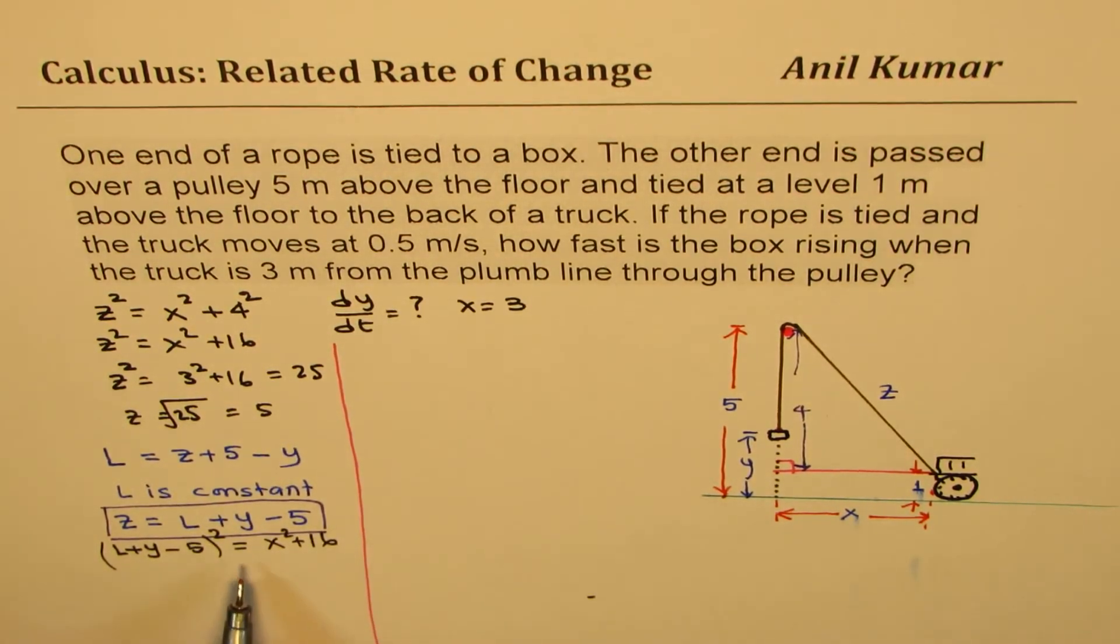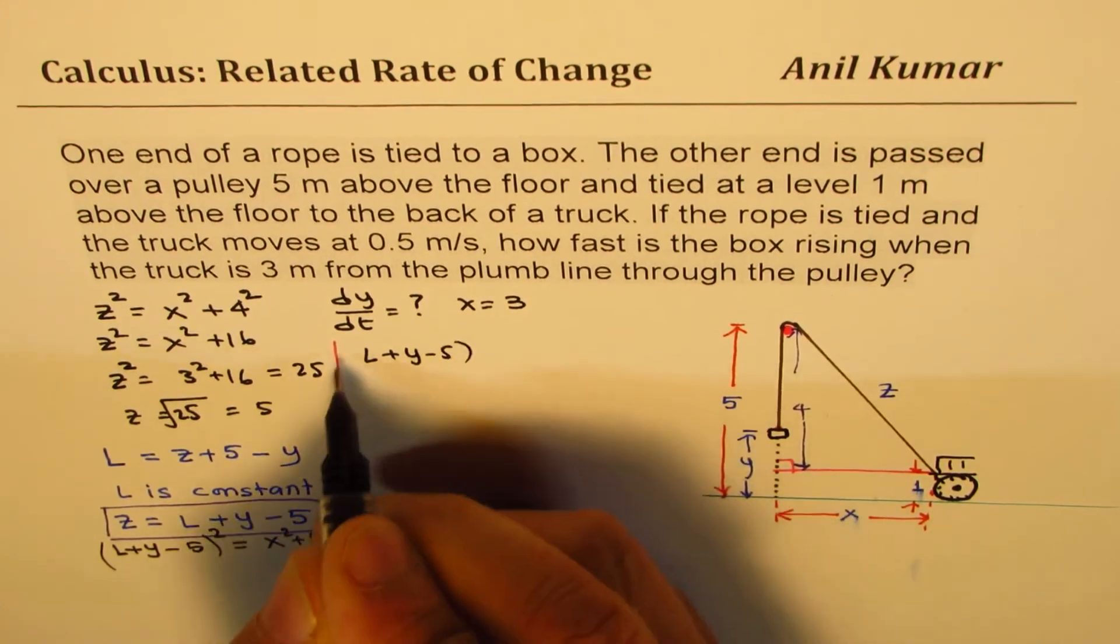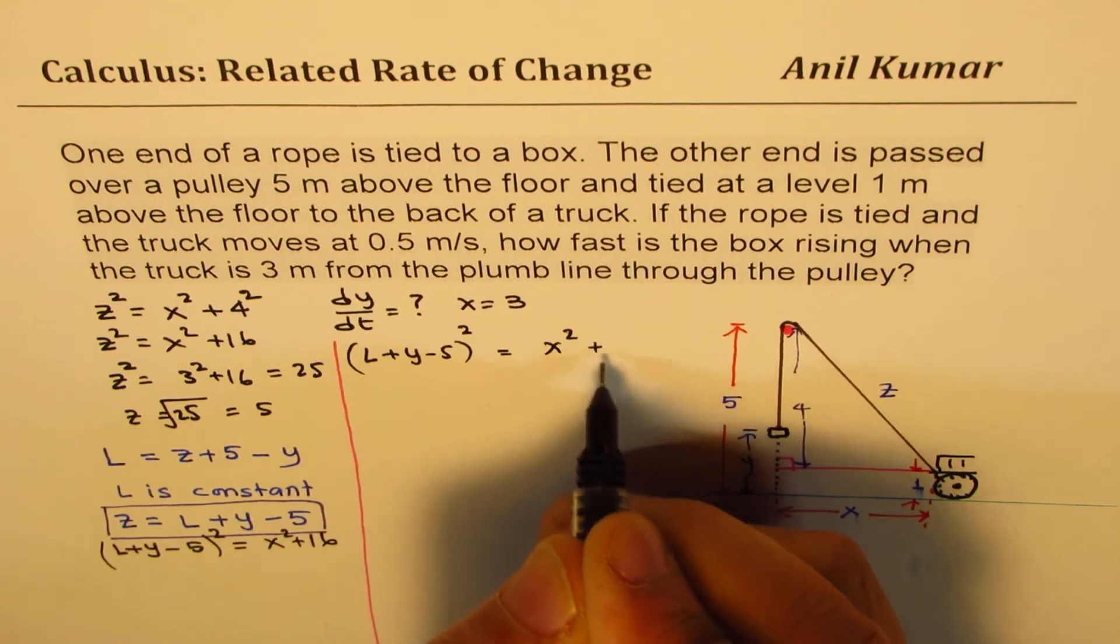So how did we derive this equation is very clear to you. Now let's work on this. So we have (L plus Y minus 5) whole squared equals X squared plus 16.